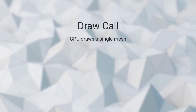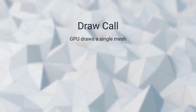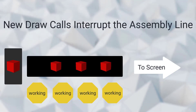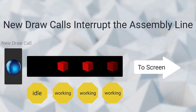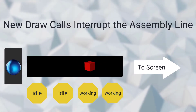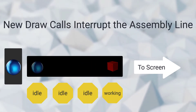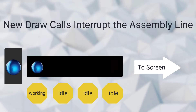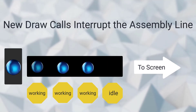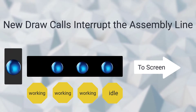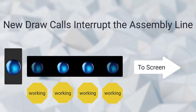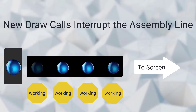Unity sometimes groups these draw calls into batches. Draw calls and batches interrupt the GPU assembly line. It's like a factory being reconfigured to manufacture something different. Cores sit idle waiting for other cores to finish working, and waiting while new draw call data is loaded into the GPU. The more draw calls there are, the more interruptions there are for the GPU, and the longer it takes to get its work done.